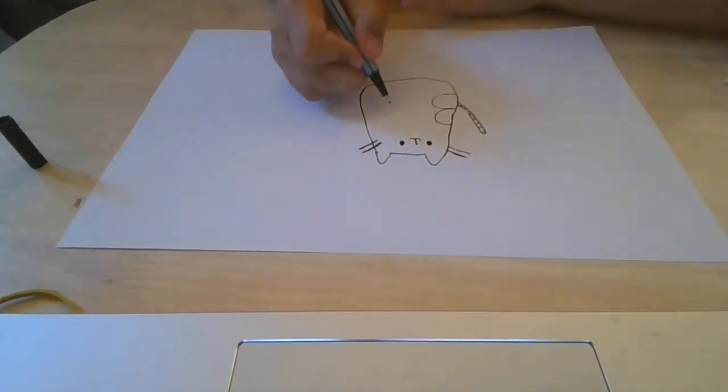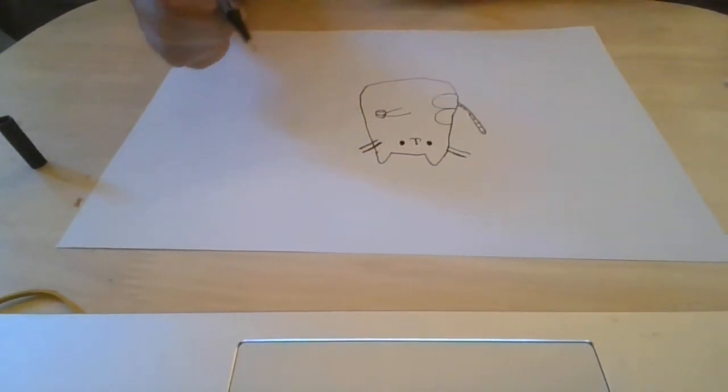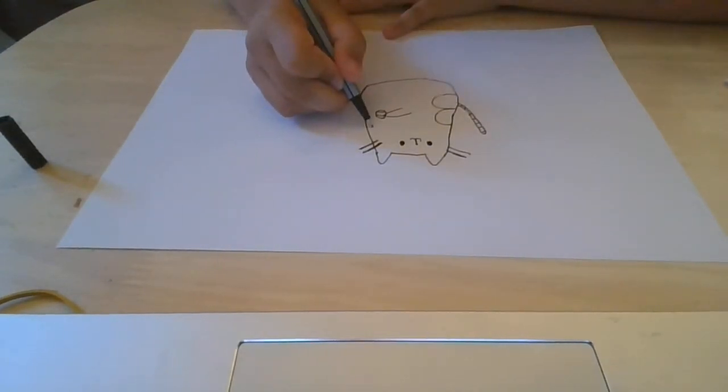Now we need to draw Pusheen's arm or should I say paw with the ball. And add some of those lines onto the paw. Now start here and go out like this.